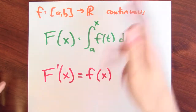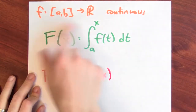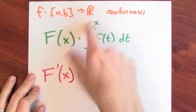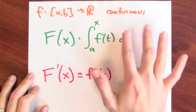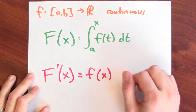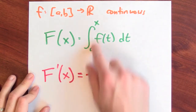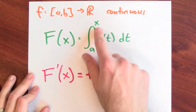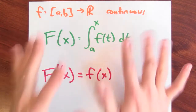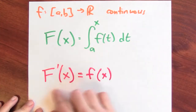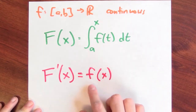Just to remind you, this is what we're going to prove rigorously. I'm going to start with some function from the closed interval [a, b] to the real numbers — it's a continuous function, so it's actually integrable. Then I'll write down the accumulation function, big F, which takes the integral from a to x of the function little f. The big claim is that the derivative of the accumulation function is the function little f.